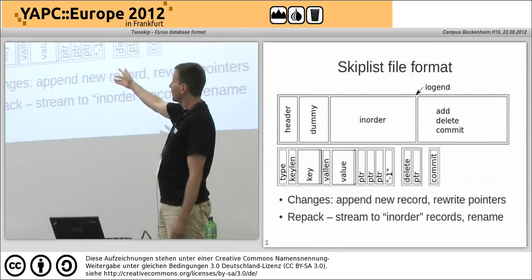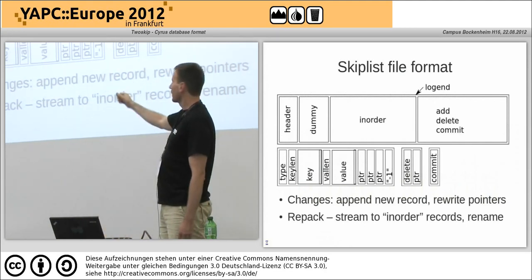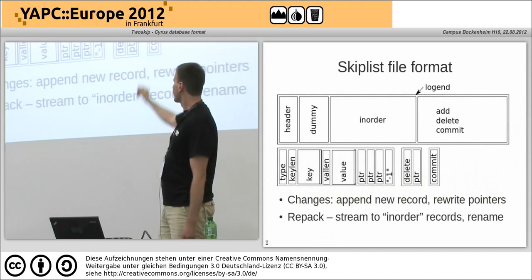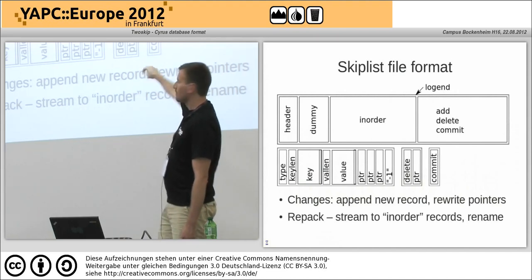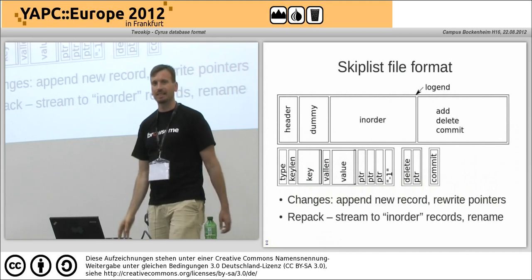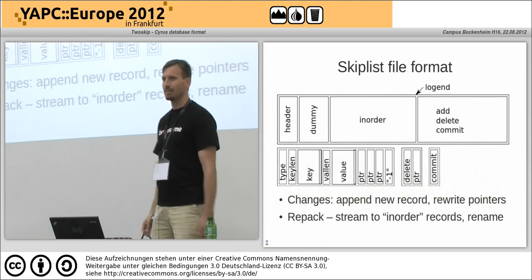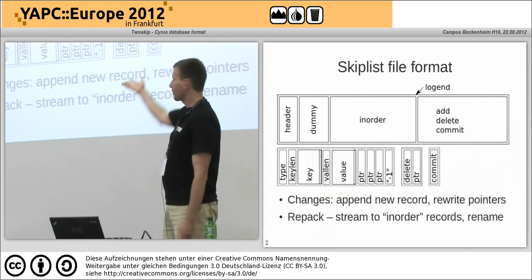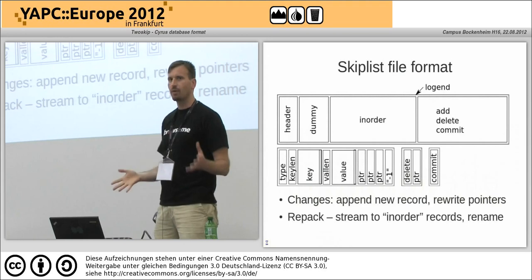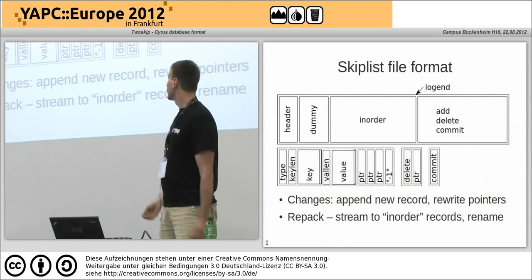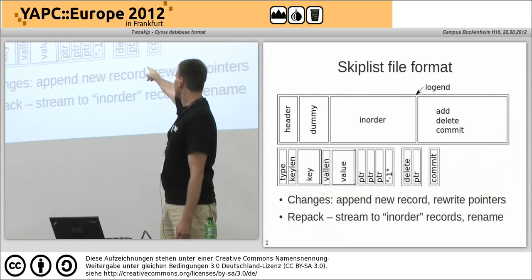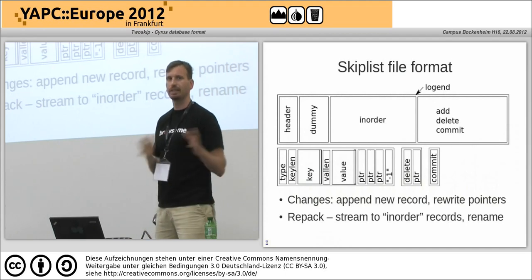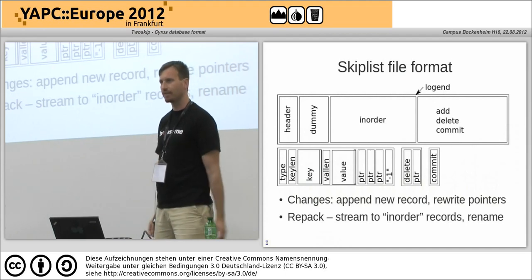It stores the type, key with a length in front, value with a length in front, some pointers to further nodes, and the magic value minus one, which says we've hit the end of the pointers — it's an unsigned 32-bit. So these are all 32-bit, all in network byte order. It's fairly portable. There's also a delete and there are commits because it's transactional and you need to find out where everything was.